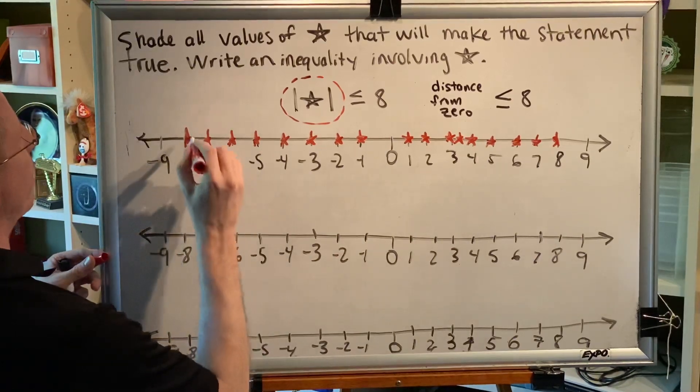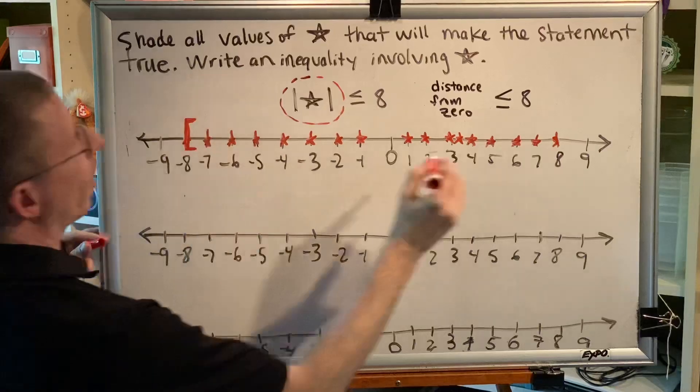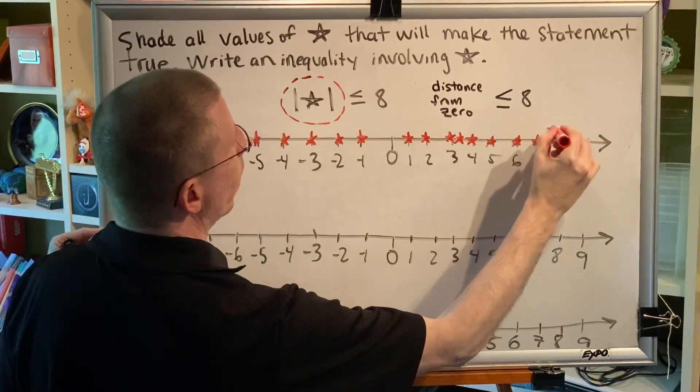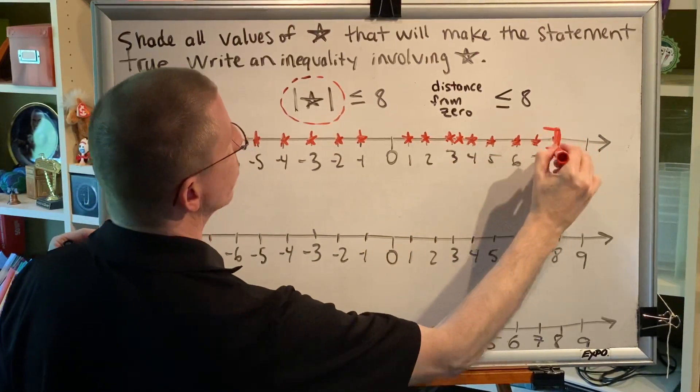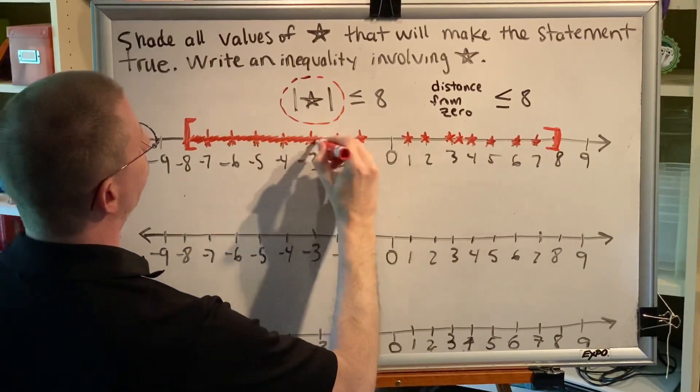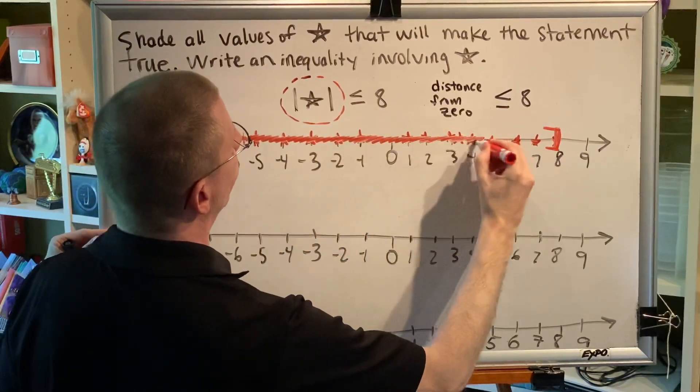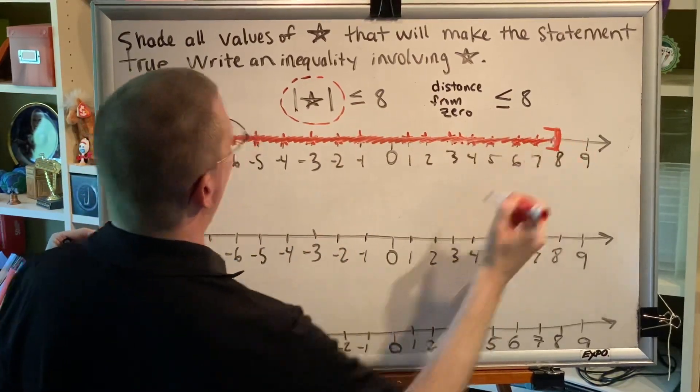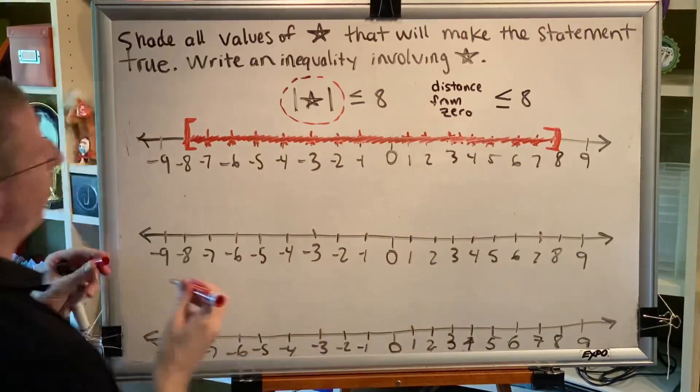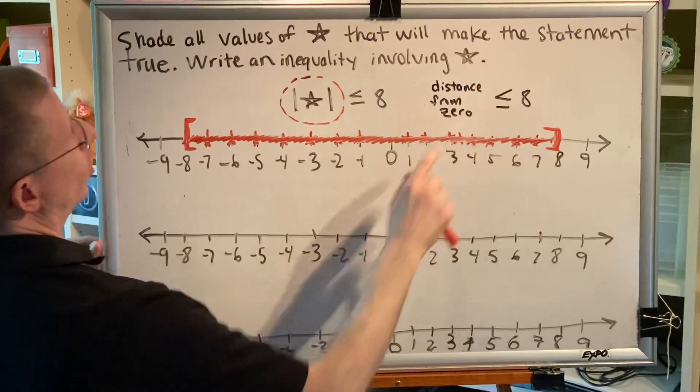So the point that we get from this exercise is if we wanted to shade all of the numbers on the number line that are 8 steps away from 0 or less, it would look like this. Every number between negative 8 and positive 8 is 8 steps or less away from 0.